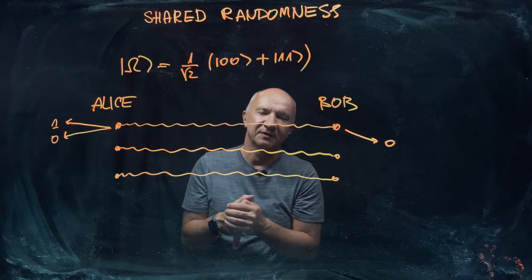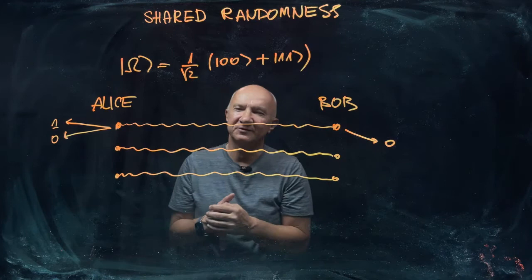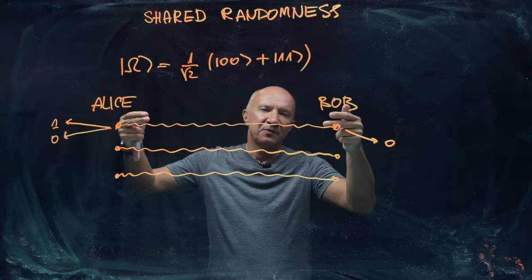She's just generating a perfectly correlated pair, which is randomly chosen either |00⟩ or |11⟩.